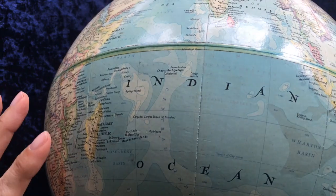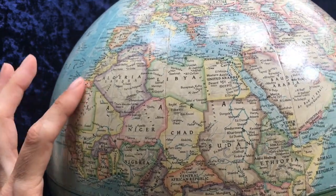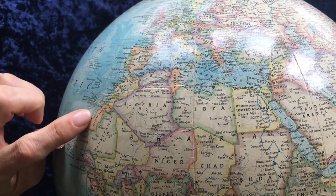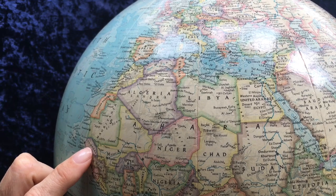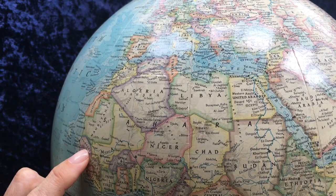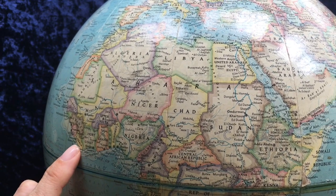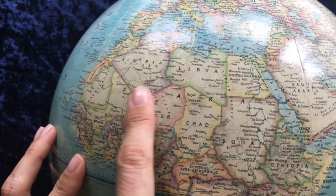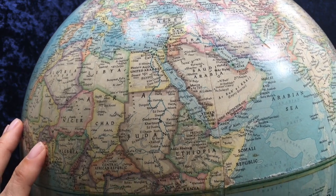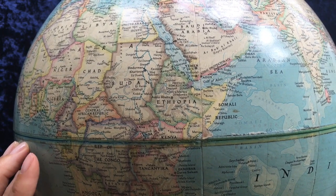So here we have Africa: Morocco, Tunisia, Spanish Sahara, Senegal, Guinea, Portuguese Guinea, Gambia, Sierra Leone, Togo, Dahomey, and Upper Volta, Cameroon, Belgian Congo, Gabon.